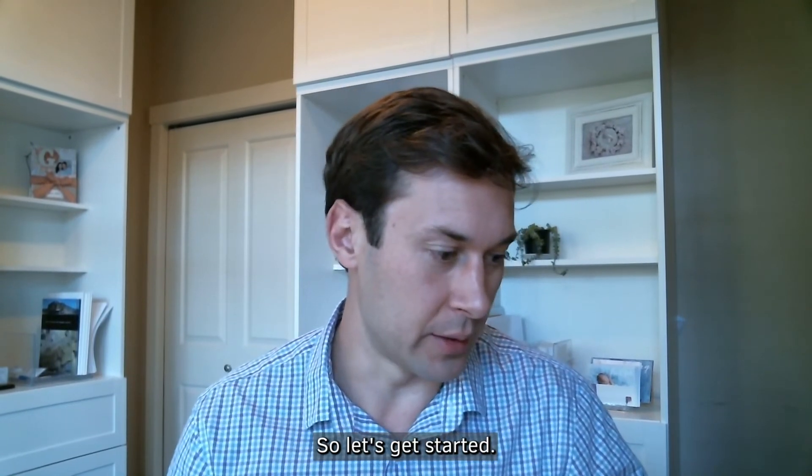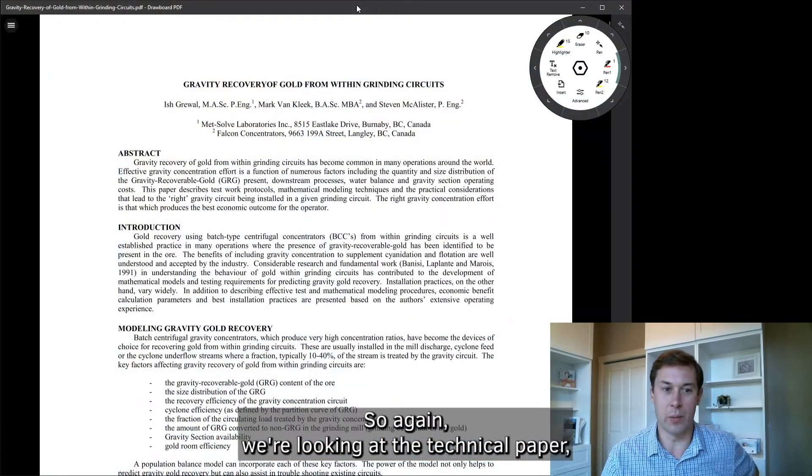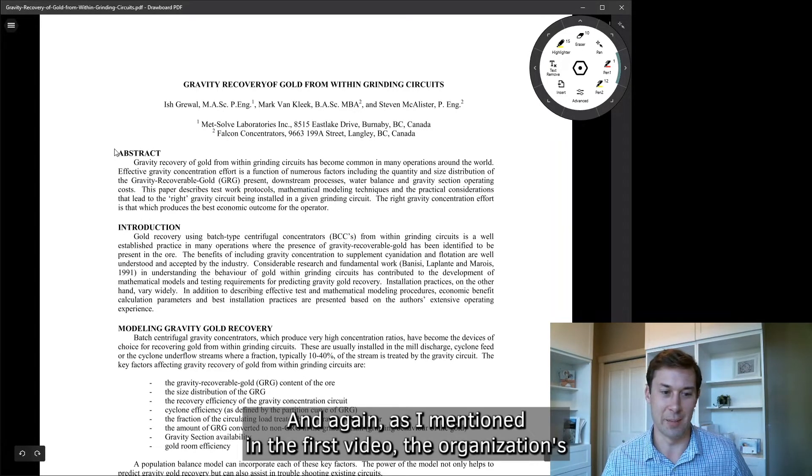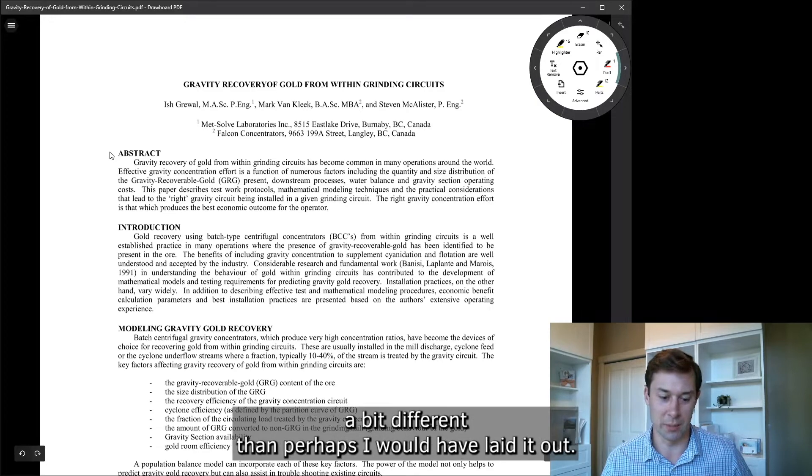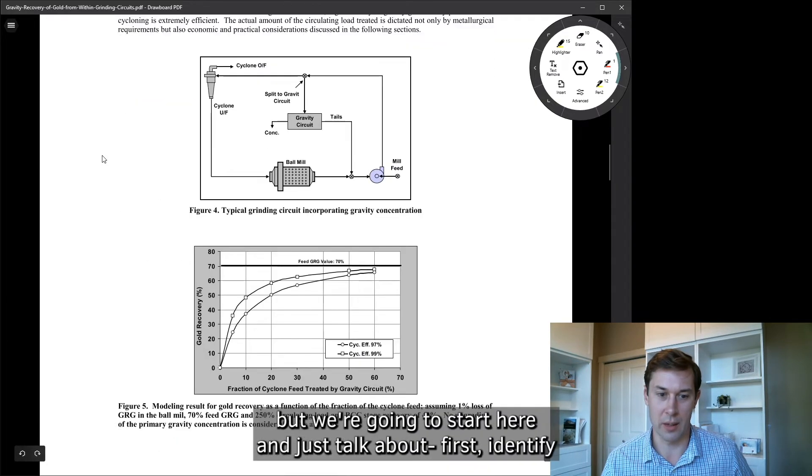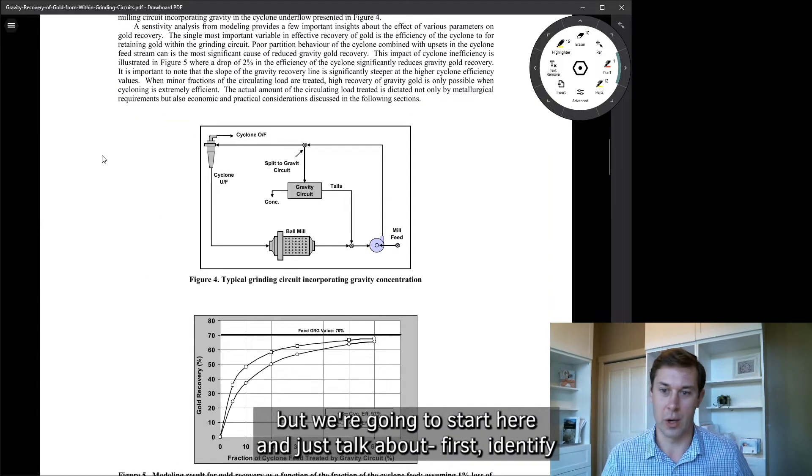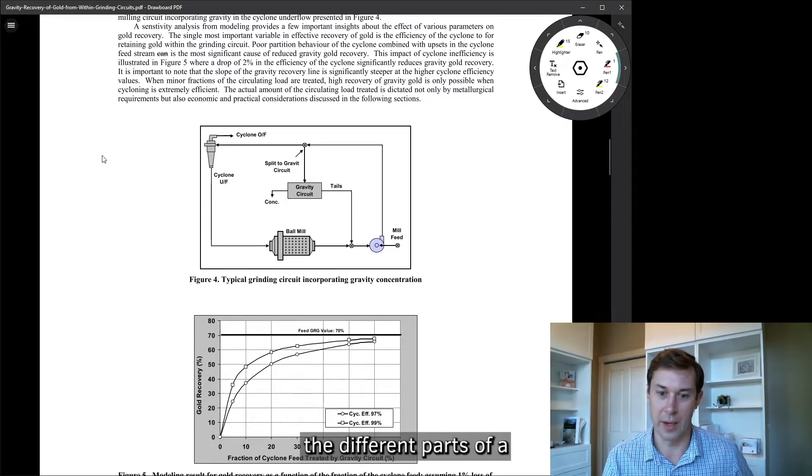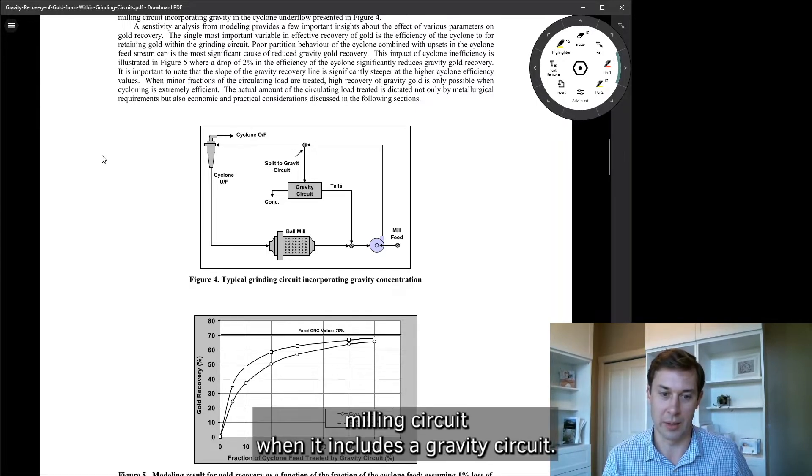So let's get started. So again, we're looking at the technical paper, gravity recovery of gold from within grinding circuits. And again, as I mentioned in the first video, the organization's a bit different than perhaps I would have laid it out. So we're going to jump around a little bit, but we're going to start here and just talk about, first identify the different parts of a milling circuit when it includes a gravity circuit.